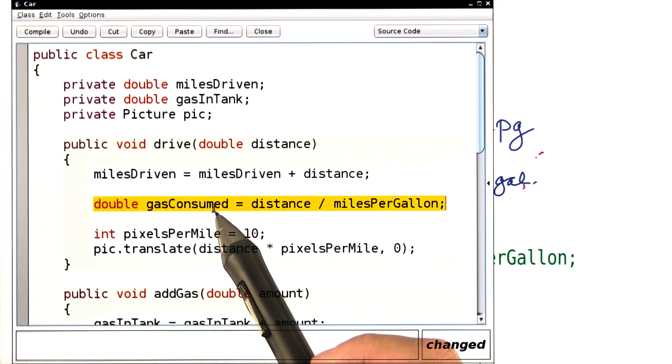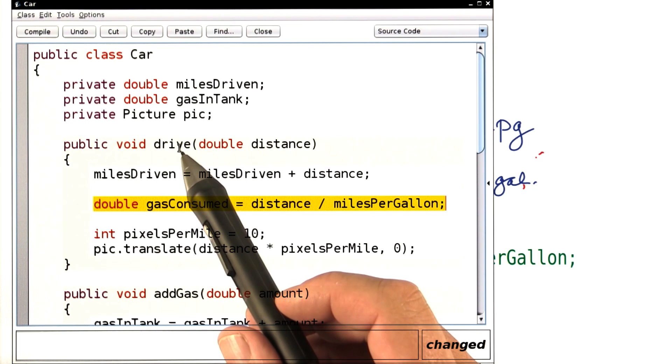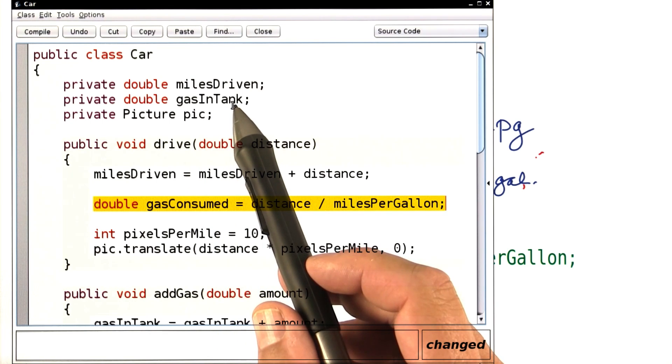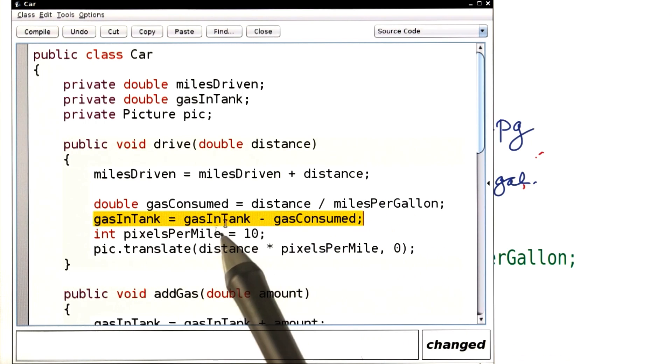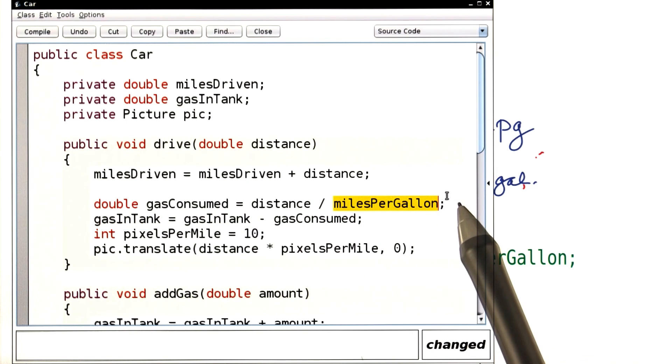Of course, that just tells us how much gas was consumed during the drive. We still need to update the instance variable. Let's do that. Here it is. We reduce gas in tank by the amount of gas that was consumed. And we need to set this variable here.